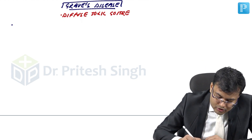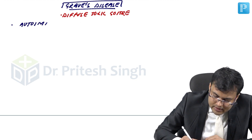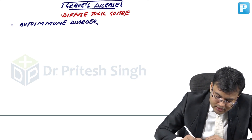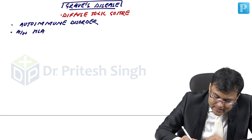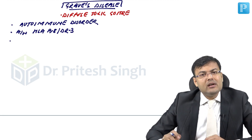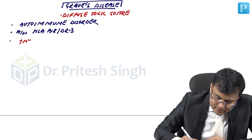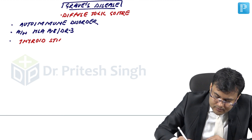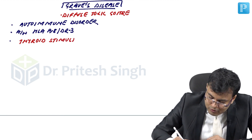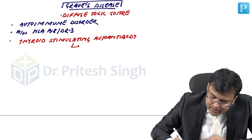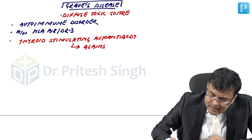Graves' disease is an autoimmune disorder. It is associated with HLA B8 and DR3. Since it is an autoimmune disorder, there is an autoantibody — the thyroid stimulating autoantibody, which acts against the TSH receptor.